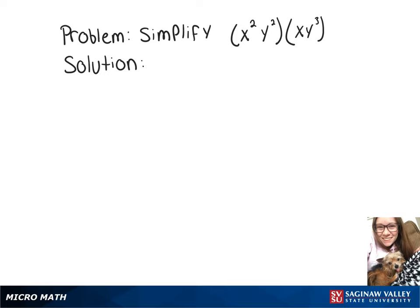To simplify this expression, we want to add our exponents together. So on x, we have 2 and 1, so we'll have x to the 2 plus 1. We'll have y to the 2 plus 3. And that gives us our final answer of x to the 3rd times y to the 5th.